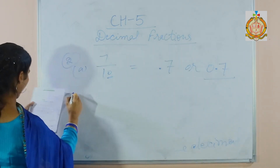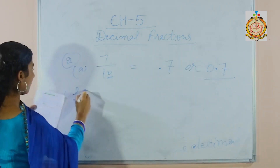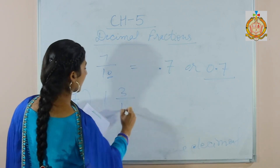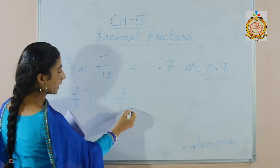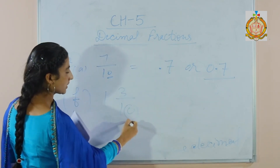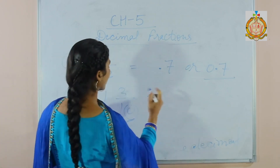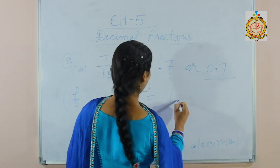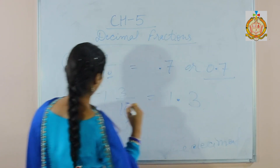Same, part F: 13 over 10. The denominator has 10, so that's why there will be 1 decimal place. The answer is 1.3.